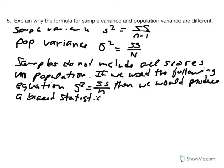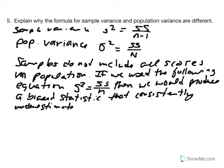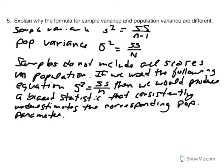A biased statistic consistently underestimates the corresponding population parameter. The sample variance represents the average squared deviations, and the population variance does a similar thing. However, recognizing that samples don't include all scores — the more scores you have, the more variability you will have — if we simply divide by N, we will underestimate what the actual population parameter looks like.